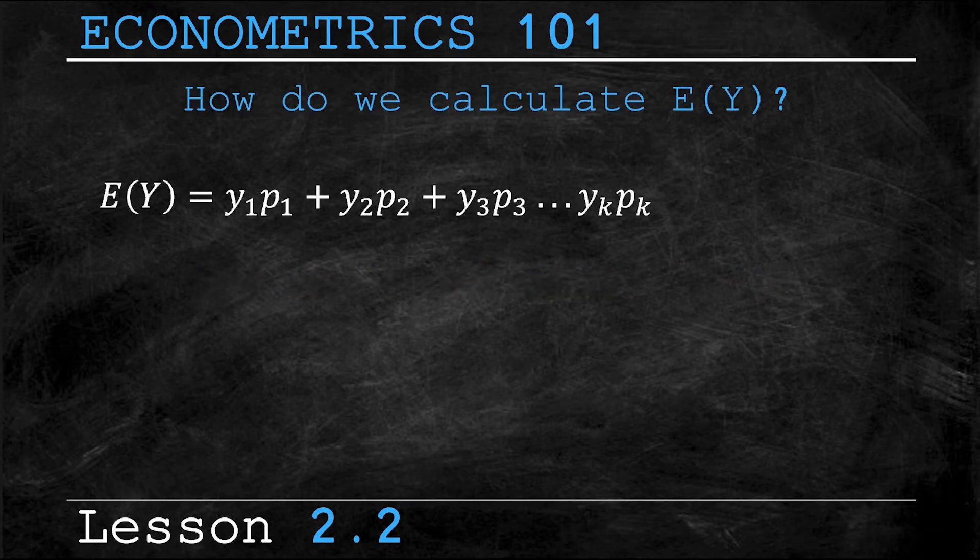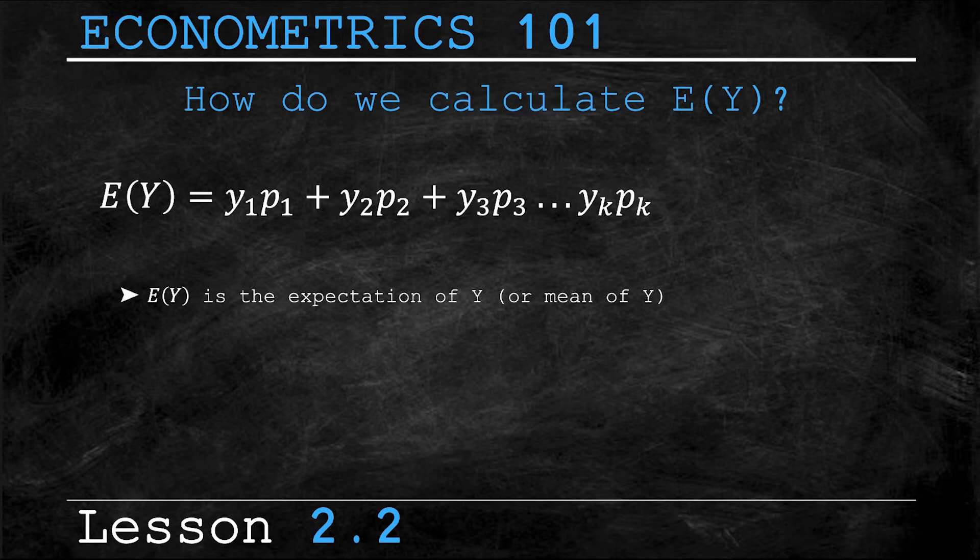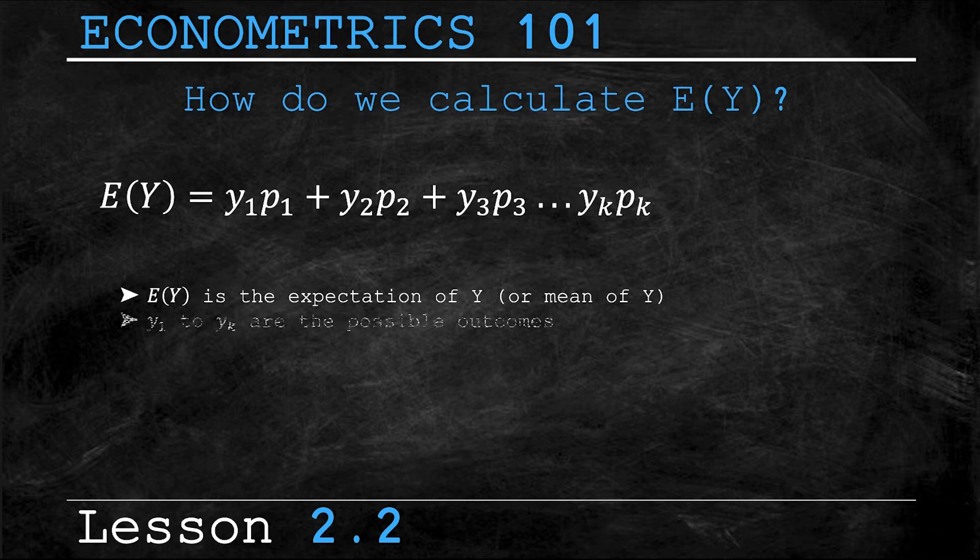Here's the equation for calculating the expectation of Y. Now in this formula, E(Y) is the expectation of Y or the mean of Y. Now assuming that there are k possible outcomes, lowercase y₁ to yₖ are all of the possible outcomes.